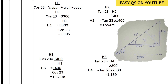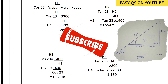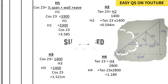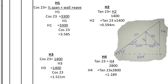We start by calculating H1, the length of the rafters. H1 will be equal to 1 over cos 23°. Using cosine — adjacent over hypotenuse — we have the adjacent of the triangle and want to find the hypotenuse. The base of the biggest triangle formed using the 23-degree angle is 3300mm.